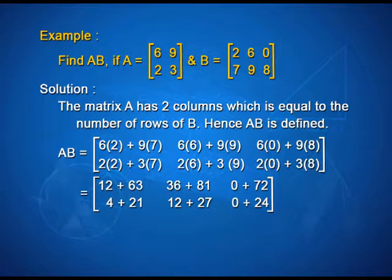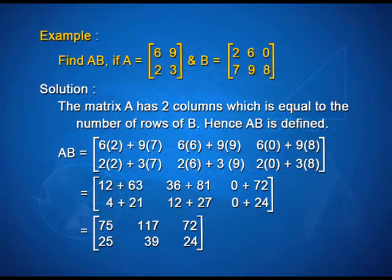On simplification, we get the matrix as [75, 117, 72] as elements of the first row, and [25, 39, 24] as elements of the second row.